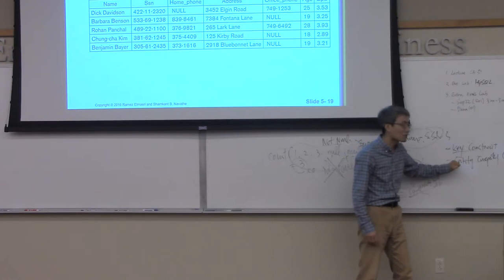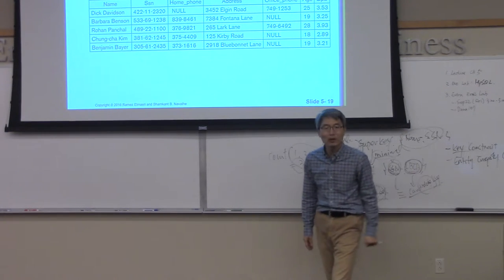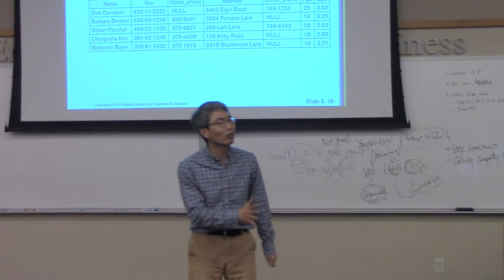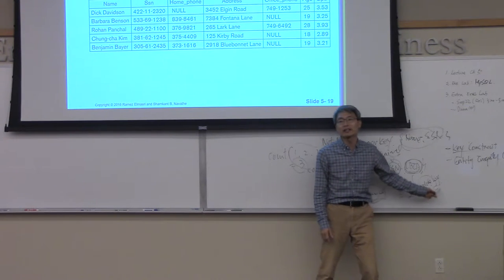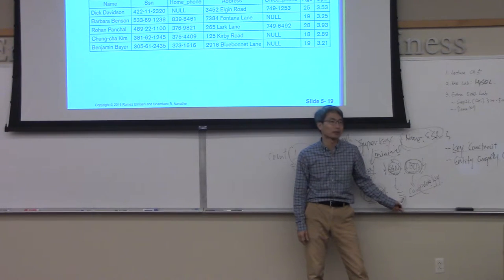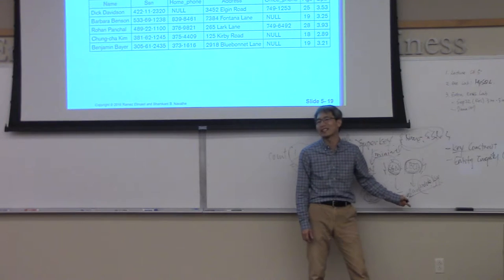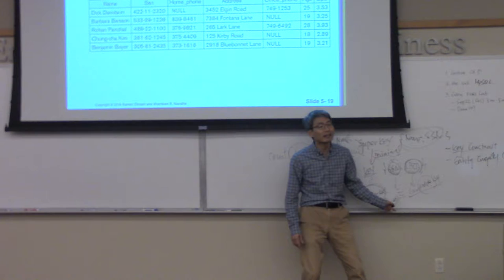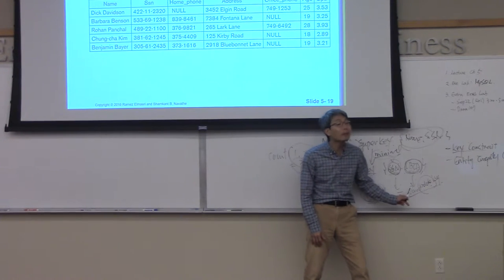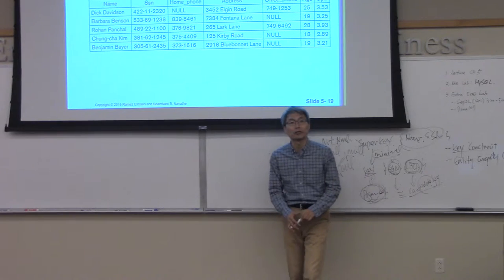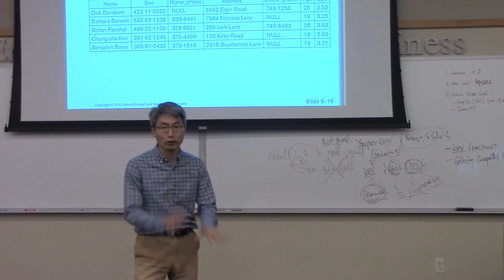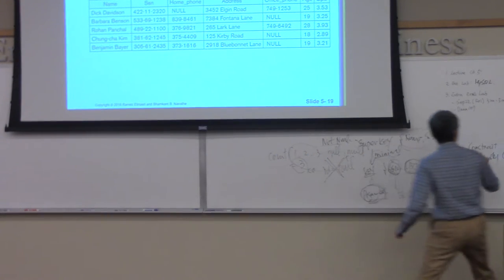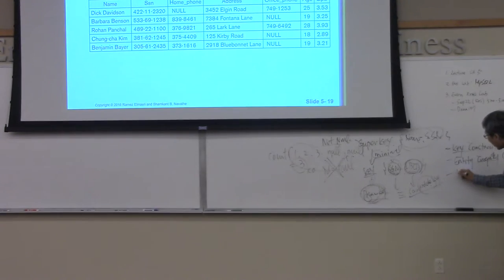What about the secondary key or candidate key — do they have to be not null? No, they don't have to be. Because they are not the primary key — they are just a key. They are usually unique, but they don't have to be not null. That is the difference between primary key and candidate or secondary key. That is the second constraint of the relational model.